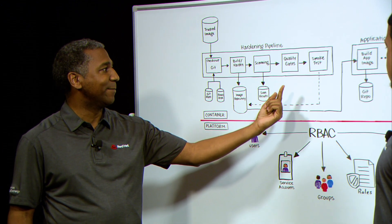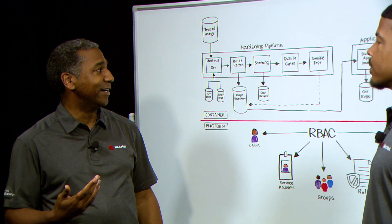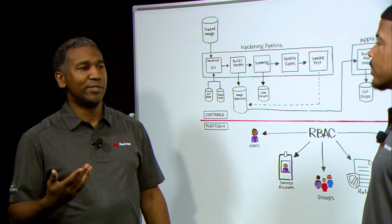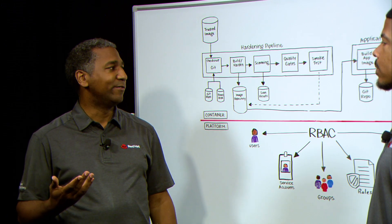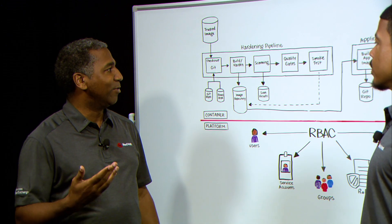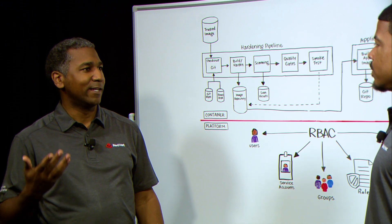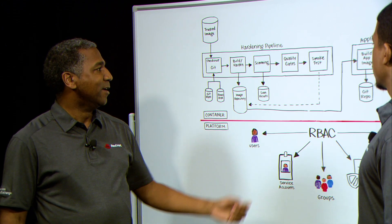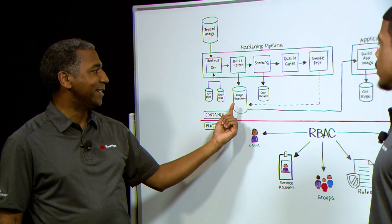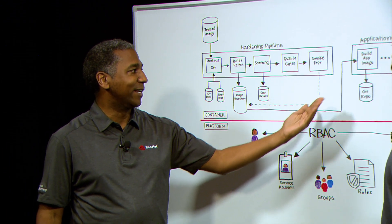Assuming we get past that step, finally we're going to perform a smoke test. During the smoke test, we want to make sure that we didn't harden our image to the point that it just doesn't work anymore. One approach would be to use something like Podman to do a Podman run to stand up our image and make sure it comes up and stays up. Another option would be to deploy the image into OpenShift and do several tests external to the image. Once that completes successfully, we go back into our image repository and mark that candidate image as a golden image — now available as an input to our application pipeline.